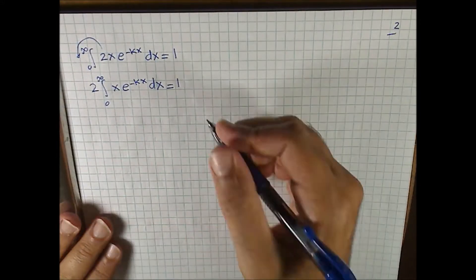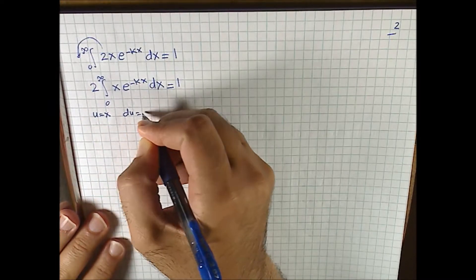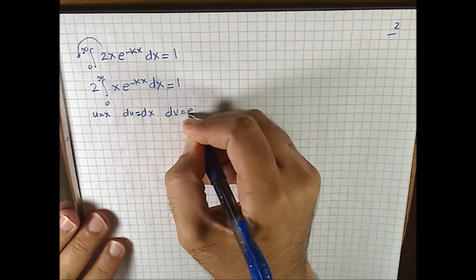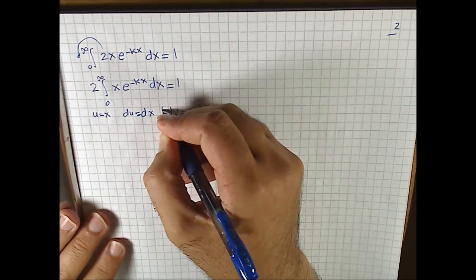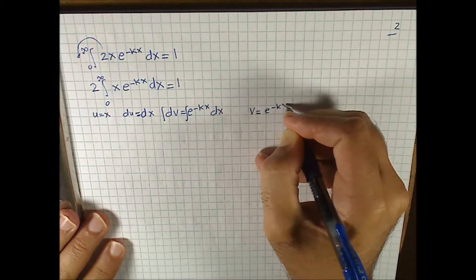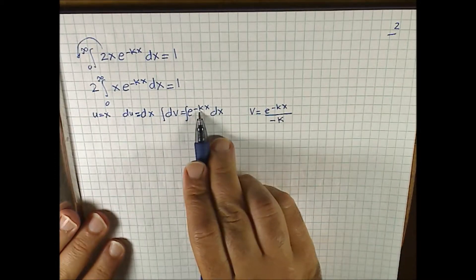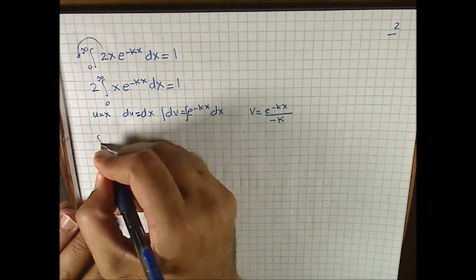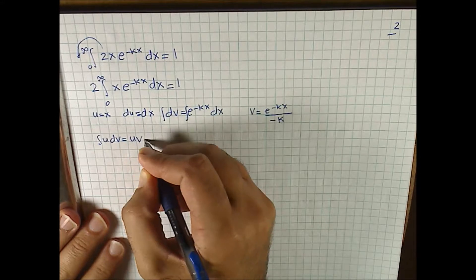We're going to do integration by parts. Let u equal x, so du equals dx. Let dv equal e to the negative kx dx. Integrating both sides, we get v equals e to the negative kx divided by negative k — that's because of the substitution rule if you let u equal negative kx. The integration by parts formula is: integral of u dv equals uv minus the integral of v du.